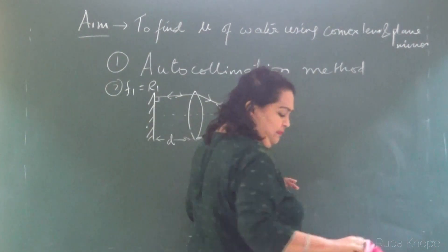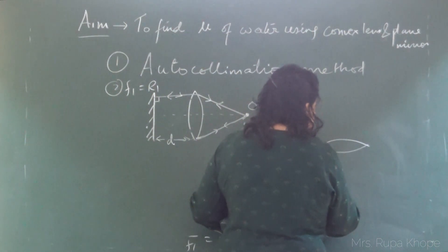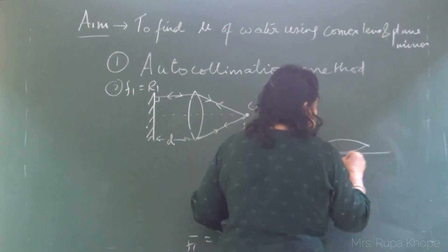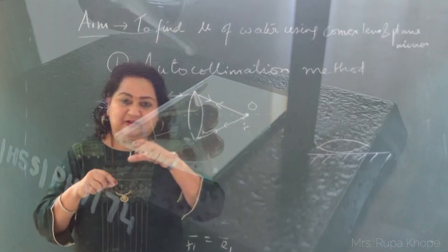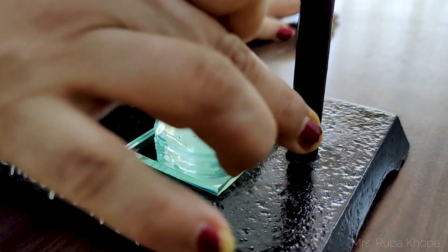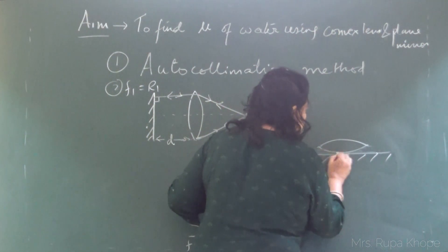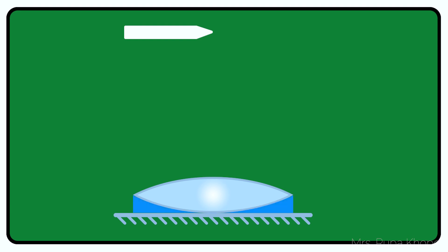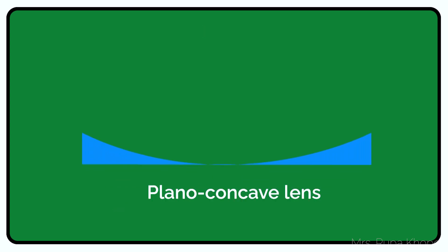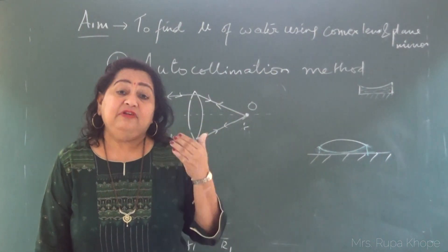Now, referring to the diagram with the convex lens and the plane mirror, we remove the lens, put some droplets of water — a thin layer of water — on top of the plane mirror, and then keep the convex lens back on top of it. By putting water here, we have created one more lens. Now there are two lenses: one is the convex lens, and the other is a plano-concave lens — one side is plane and the other side is concave — forming a plano-concave liquid lens.